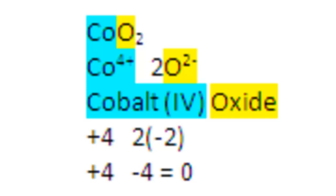Cobalt 4 oxide. Well, let's verify it's cobalt 4. Oxide is negative 2. And there's two of them. That contributes a total of negative 4.